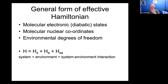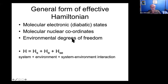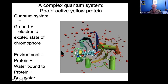There's a general form for the effective Hamiltonian. There's a partition where you have the molecular electronic states — I'll talk about diabatic states shortly — and the molecular nuclear coordinates, generally just the chromophore, plus all the environmental degrees of freedom. You can partition the Hamiltonian into three parts: one describing the system (essentially the molecule/chromophore), one describing the environment, and one describing the system-environment interaction.